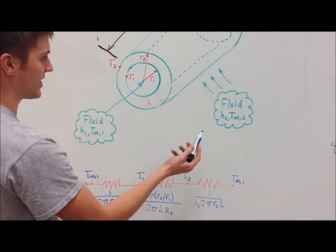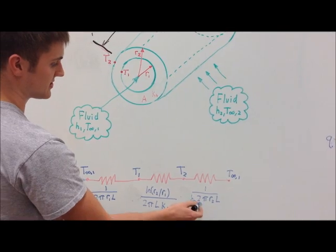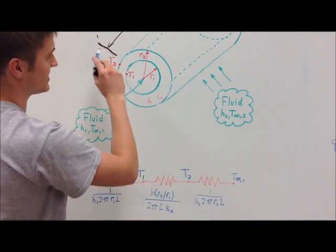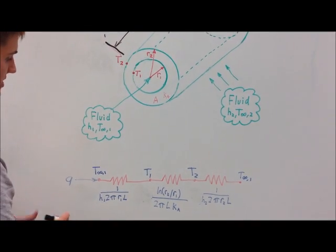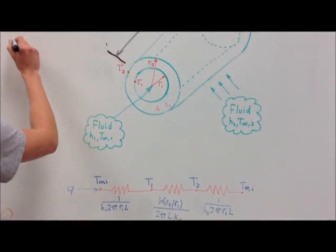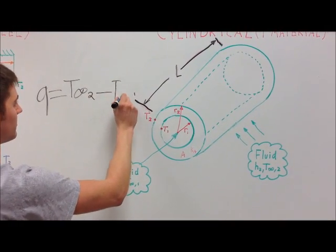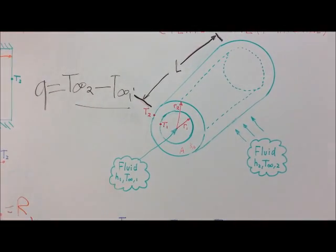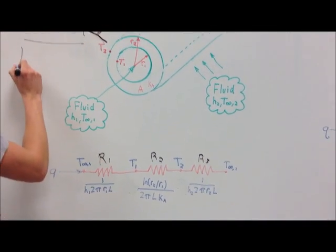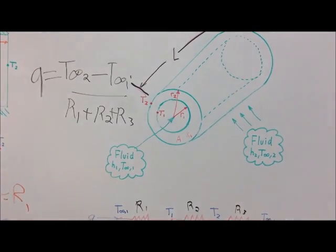The third resistor is convection with the ambient on the outside, equal to 1/(h · 2πR2 · L). To solve for the heat rate, it is the temperature difference between the two ambients divided by the total resistance. Since it is a series circuit, R1, R2, and R3 simply add together to give the total resistance and the heat rate.